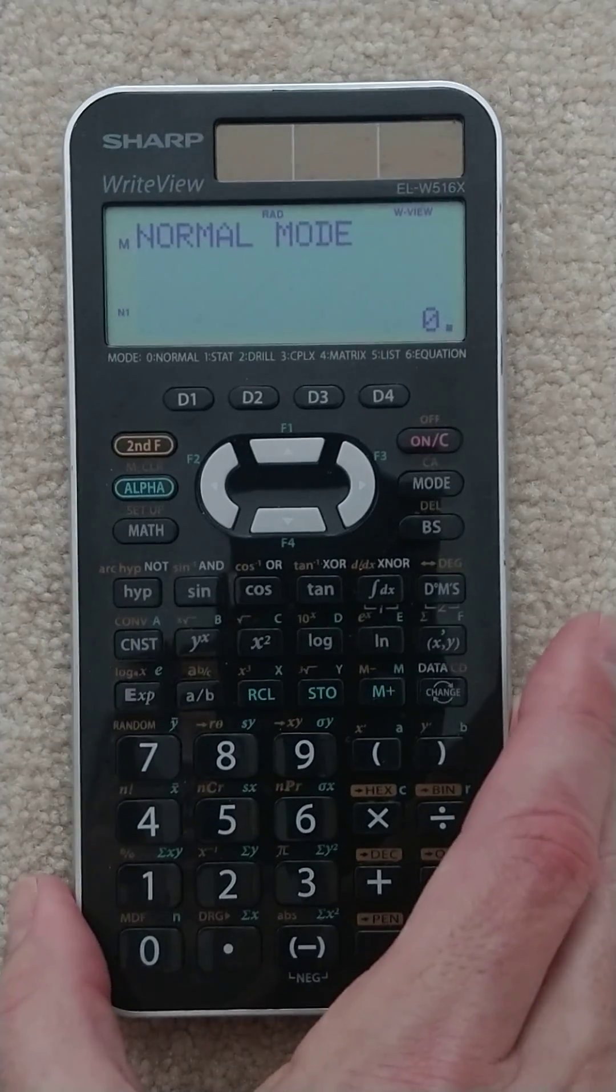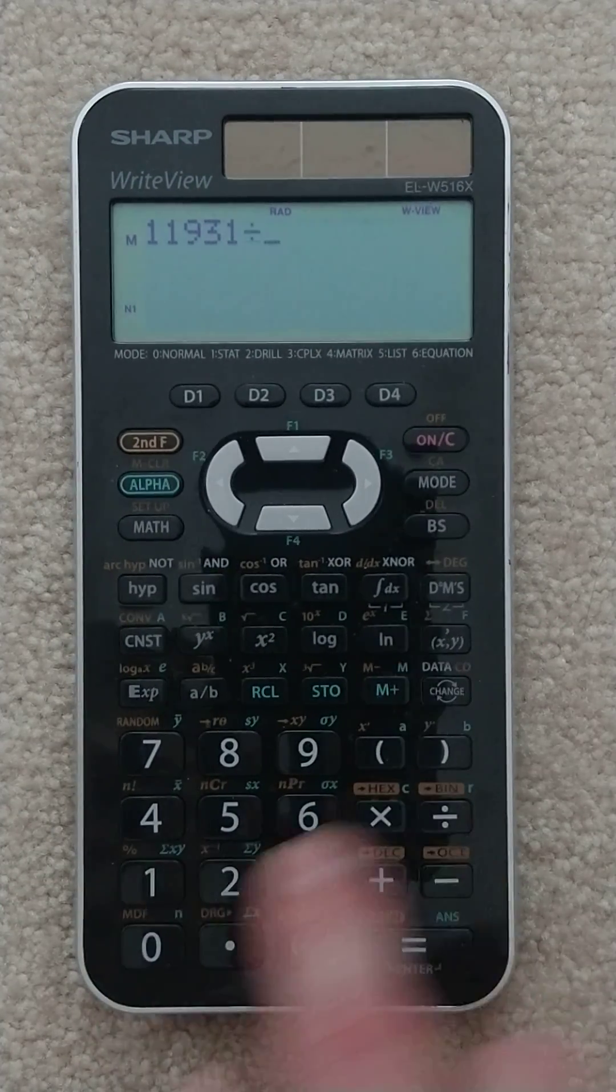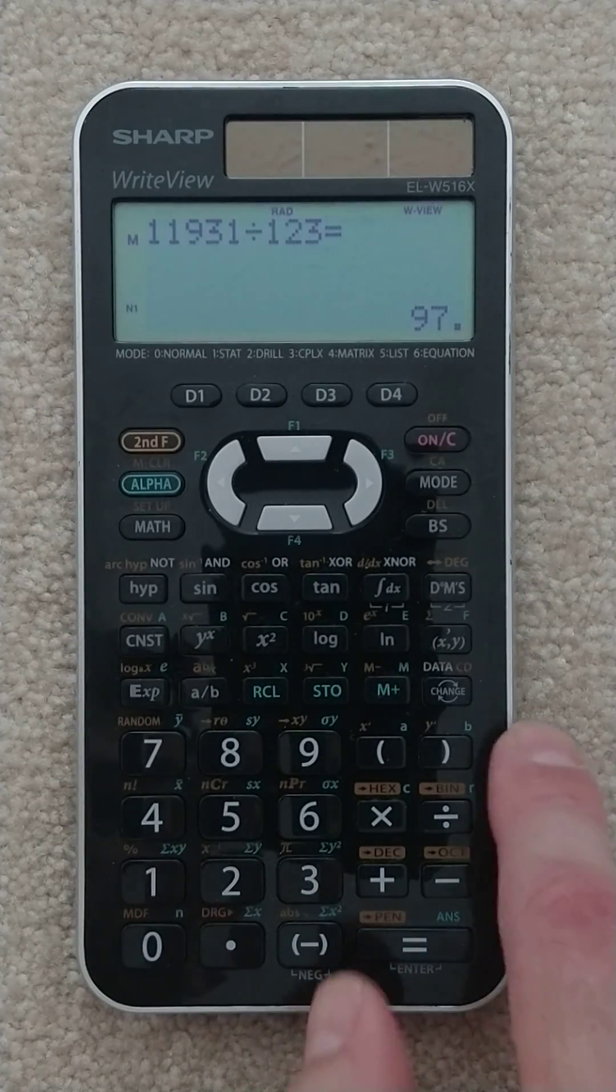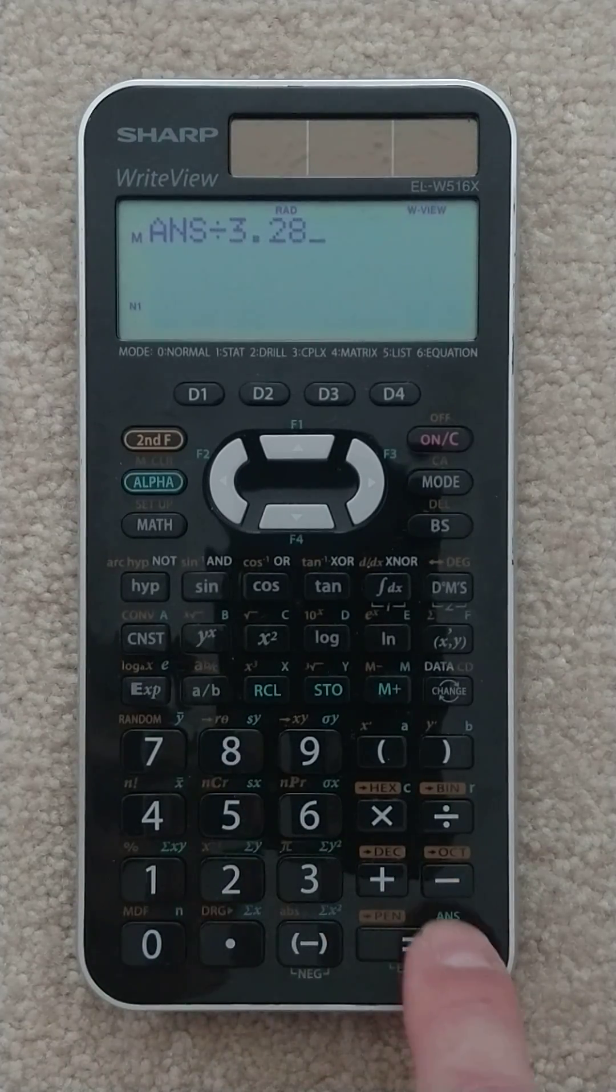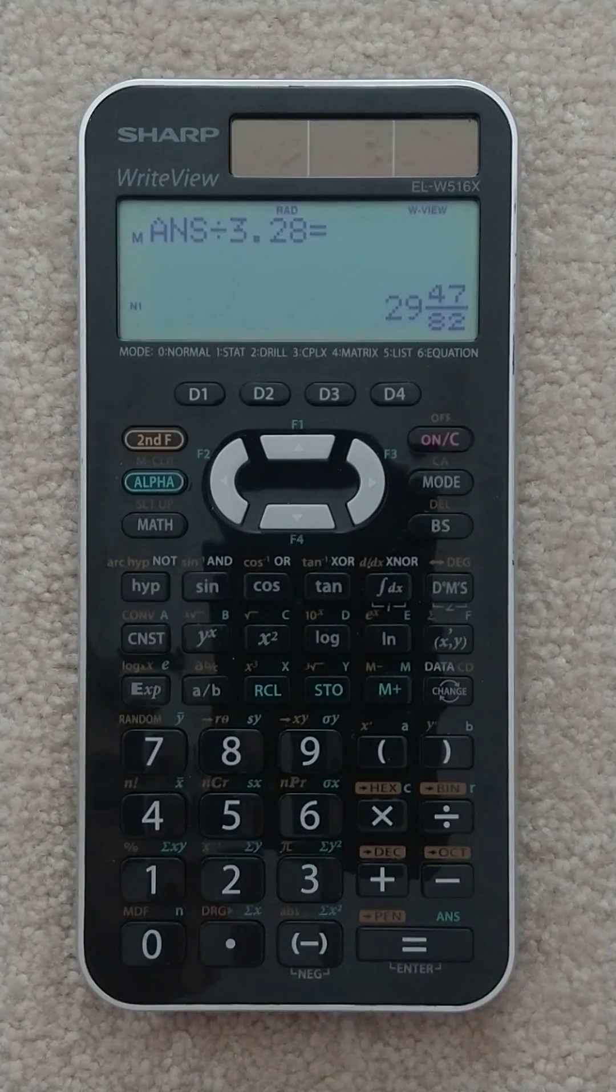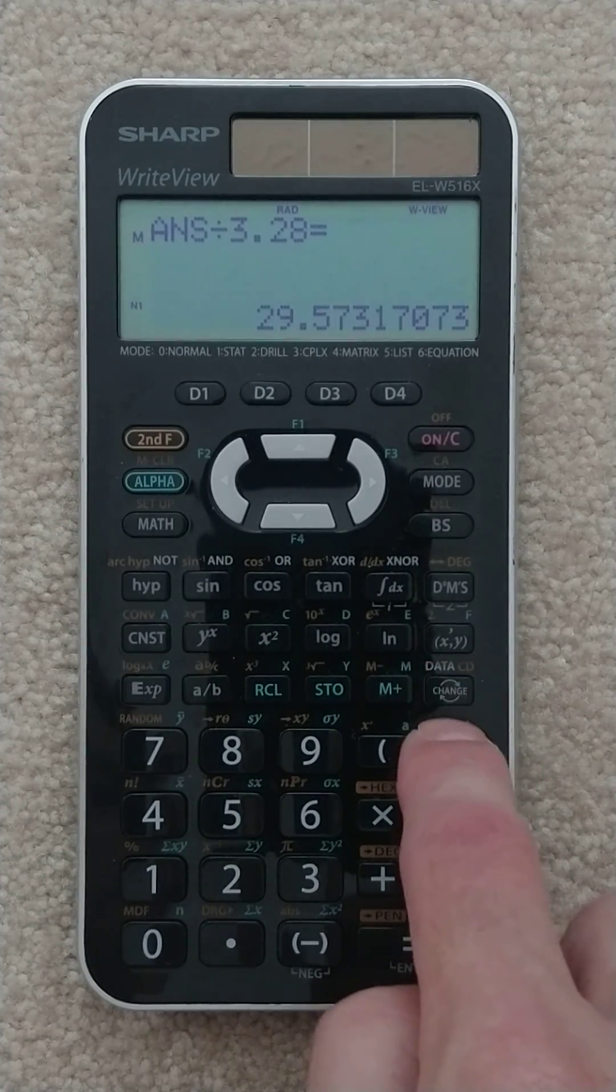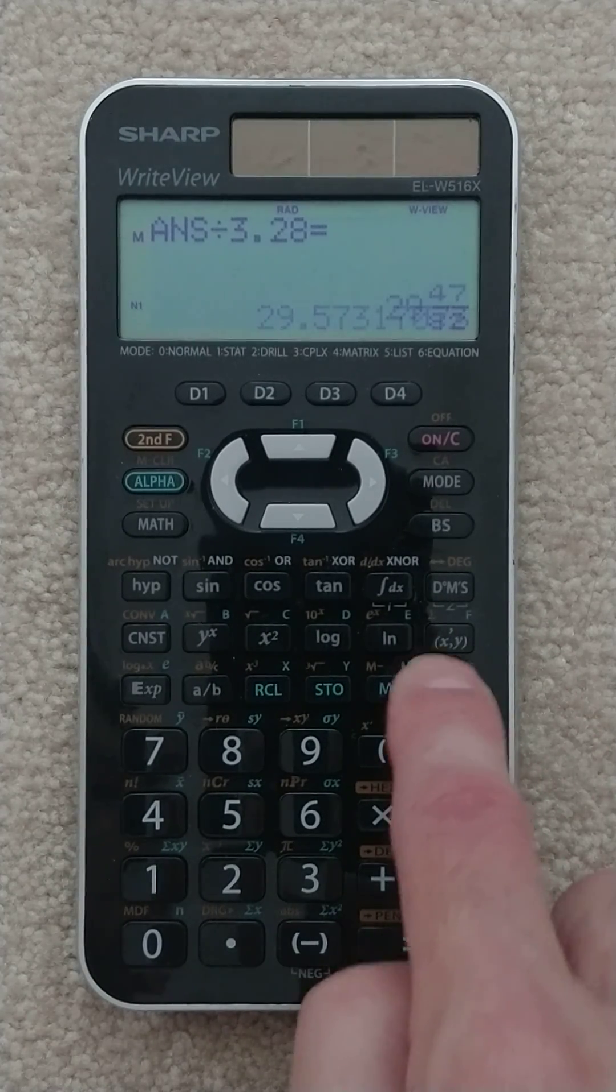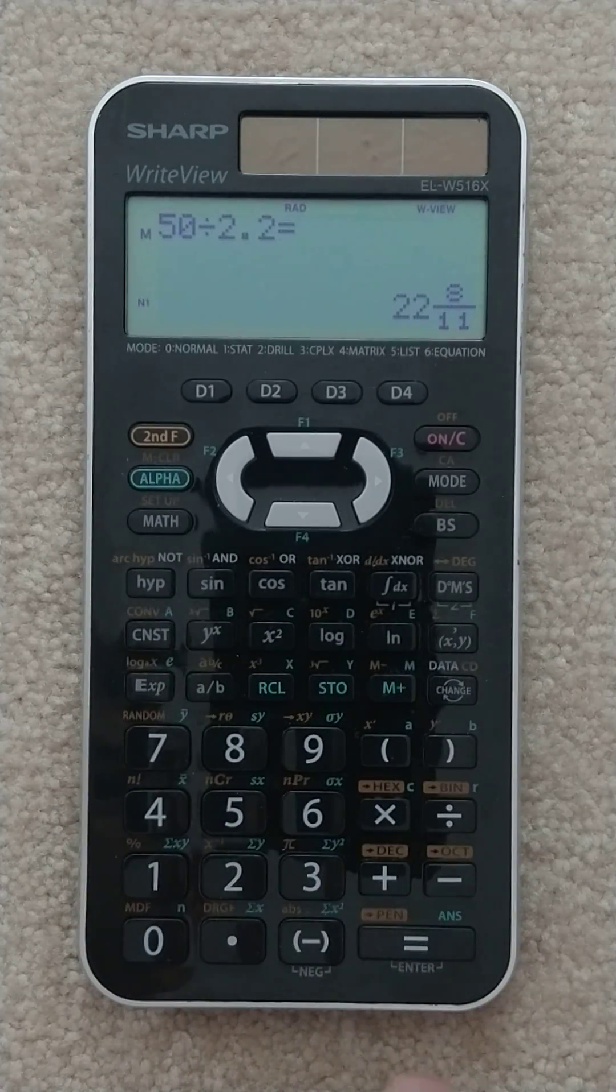Let's do the same thing on the Sharp. 11,931 divided by 123 seconds. But we need to convert that to meters per second. And then we get that answer. It's expressed as a fraction. You can toggle between fractions and decimals with this change button. And then we want to do 50 divided by 2.2. We get that answer.